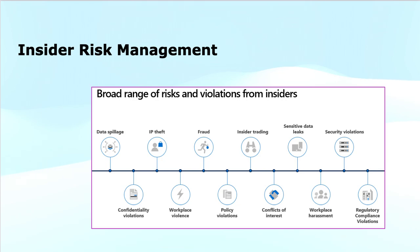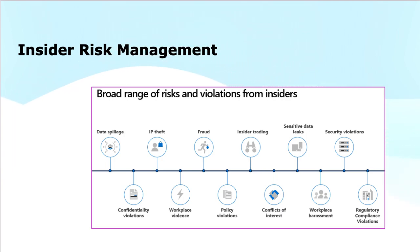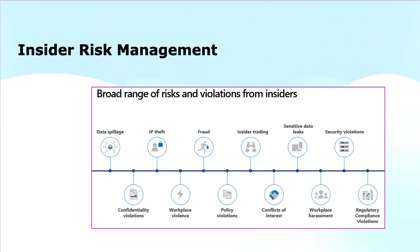IP theft is the stealing of a company's intellectual property — patents, designs or software code — for personal gain or to sell to competitors. Workplace violence is the act of violence or threats of violence in the workplace, often involving employees or contractors who can harm people or property. Fraud is done by employees manipulating data, financial reports or systems for personal financial gain such as embezzling funds or falsifying expenses. Policy violations involve employees breaking internal rules or security protocols, such as accessing unauthorized systems or sharing restricted information. Insider trading uses confidential company information to buy or sell stocks or securities for personal profit, violating financial regulations. Conflicts of interest occur when an employee's personal interests interfere with their professional responsibilities, leading to biased decisions or unethical behavior.